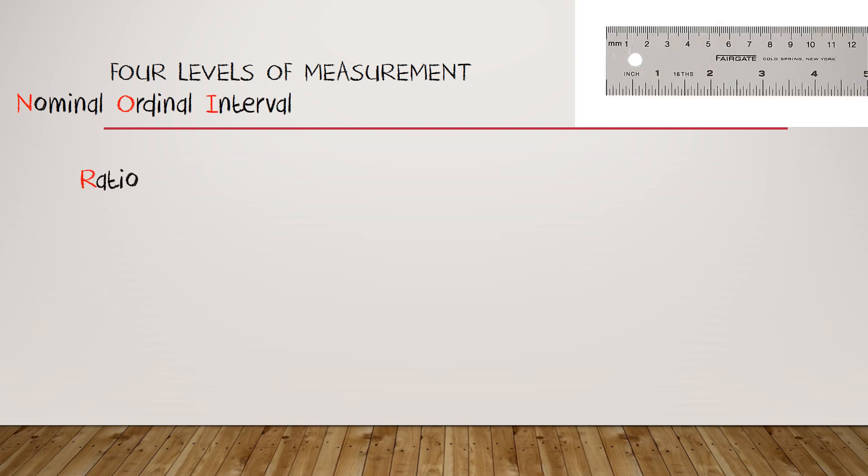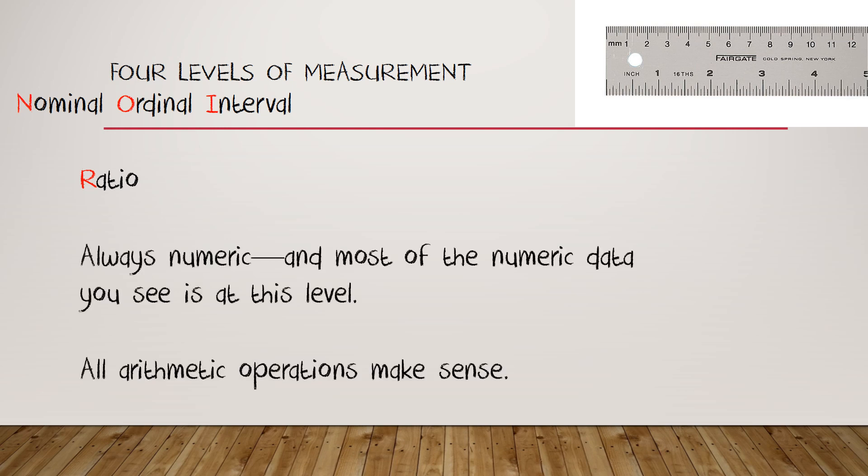All right, that's interval. That leaves one highest level of measurement, the kind where addition, subtraction, multiplication, and division all make sense. This is called ratio data. I've shown the ruler up top because it highly indicates the main characteristic of ratio data. There's a natural meaning for the term zero. Zero inches or zero centimeters means exactly the same thing - nothing, no length at all. And this is true for any numeric data. Most of the world's data that you see in this numeric will be at this level, and all arithmetic operations make sense.